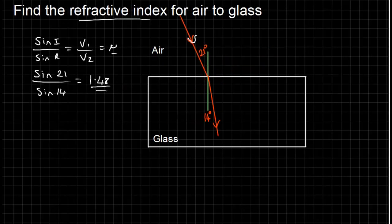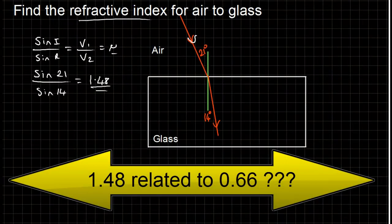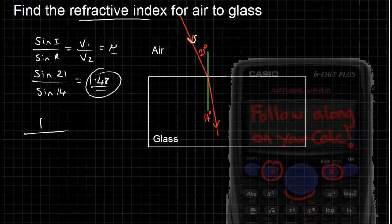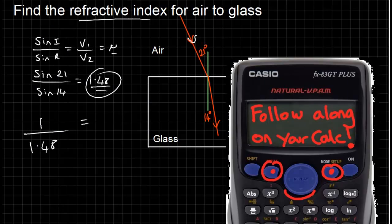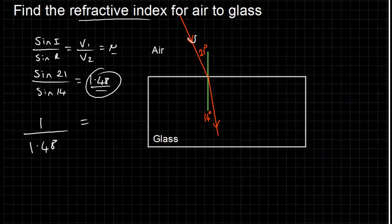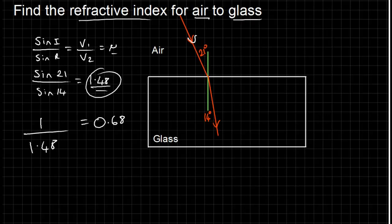These numbers actually have a relation to each other. If I take the inverse of 1.48 — that means 1 divided by 1.48 — I get 0.68 on my calculator, which is close to 0.66 with a small rounding error. So if you're going from air to glass and want the refractive index going from glass to air, you can just take the inverse of the refractive index you have — that means 1 over that number — and it works both ways.